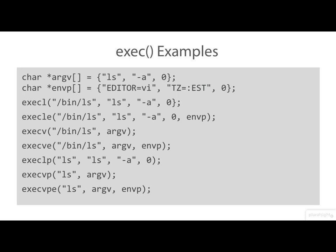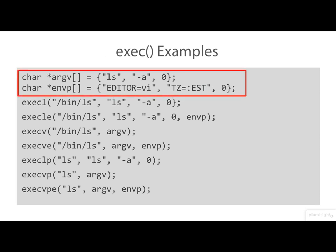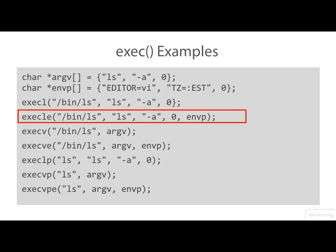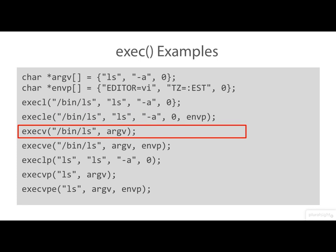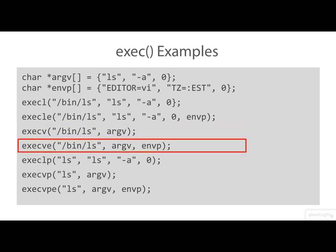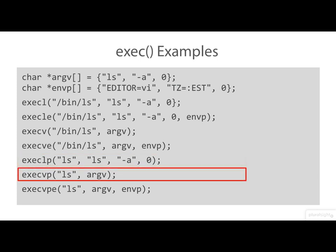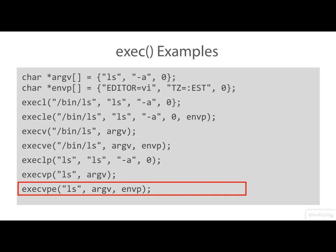Let's have a look at some examples of calls. These two lines are just defining an argument list and an environment — we'll use those in the calls lower down the page. execl here is receiving an absolute path name and an explicit list of arguments. execle — the E on the end means that we also get to pass a new environment. Here we're passing our argument list as an array, argv, rather than as an explicit list of arguments. And this is the same but with a new environment on the end as well. Then we have similar versions with a P on the end of the name, where the executable name is looked up along the search path.